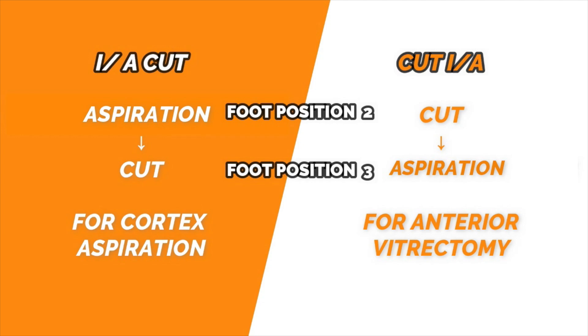IA-cut mode is used to remove cortex, while cut-IA mode is used for anterior vitrectomy. This is important because we must always cut the vitreous first and only then aspirate. Doing it the other way around can lead to traction.